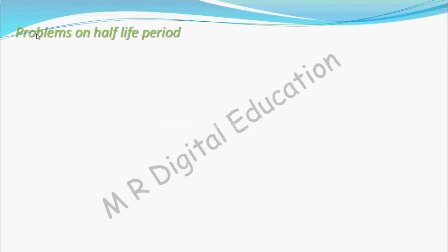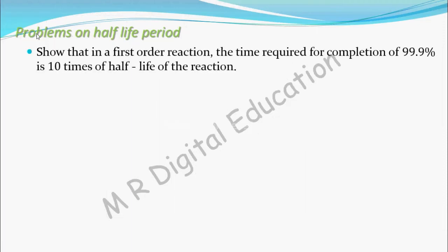Let's see one more problem on half life. Show that in a first order reaction, the time required for completion of 99.9% is 10 times of half life of the reaction. Given: the reaction is a first order reaction and we have to show the time required for 99.9% completion is 10 times of half life of the reaction.